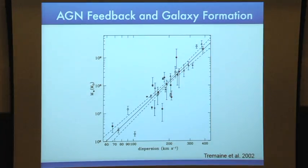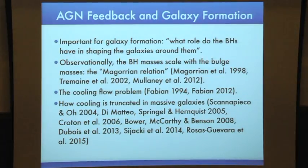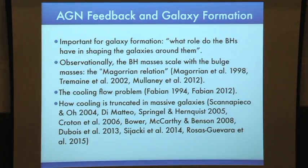For a long time, there has been an argument in the literature that the energy released by the formation of the black hole is more than enough to unbind the galaxy. Also, it was found observationally that the mechanical energy from the radio lobe is enough to offset the cooling — what is known as the cooling flow problem. Furthermore, AGN feedback is very important in galaxy formation models to understand how cooling is truncated in massive galaxies.